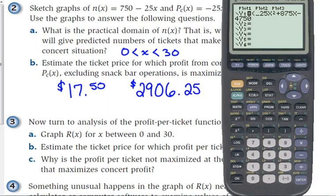Part A asks for the practical domain for N of X, which is the function for the number of tickets sold. It's a linear function. The practical domain should be identified as between 0 and 30. When you think about it, X is representing the ticket price, so you're not going to charge a negative ticket price. When you get to $30 as the ticket price, then nobody's going to buy them. So that should be the practical domain for the ticket prices.